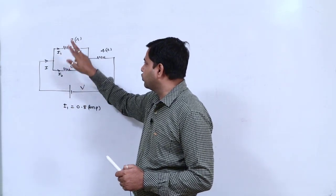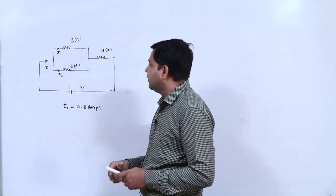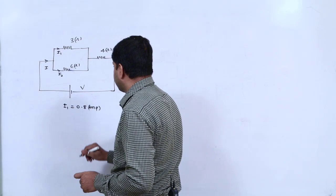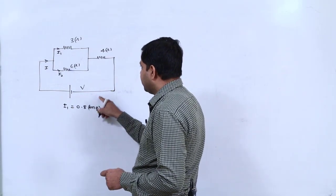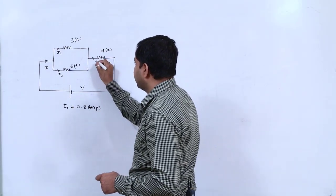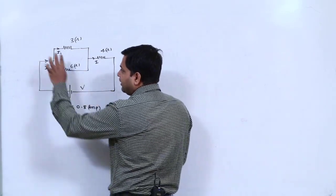i1 and i2 - you have two currents given, of which i1 value is given as 0.8 ampere. So you have to tell what will be the total potential difference across this.